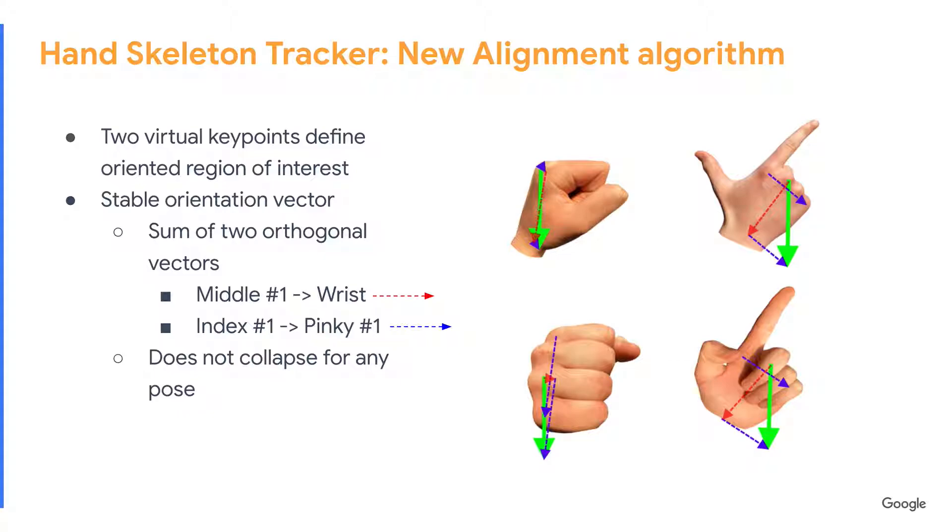We improve the MediaPipe Hands model for gesture recognition. To ensure stable tracking for different viewpoints, we use a two-component hand orientation vector: one from the middle finger knuckle to wrist, orthogonal to the vector from pinky finger knuckle to index finger knuckle.